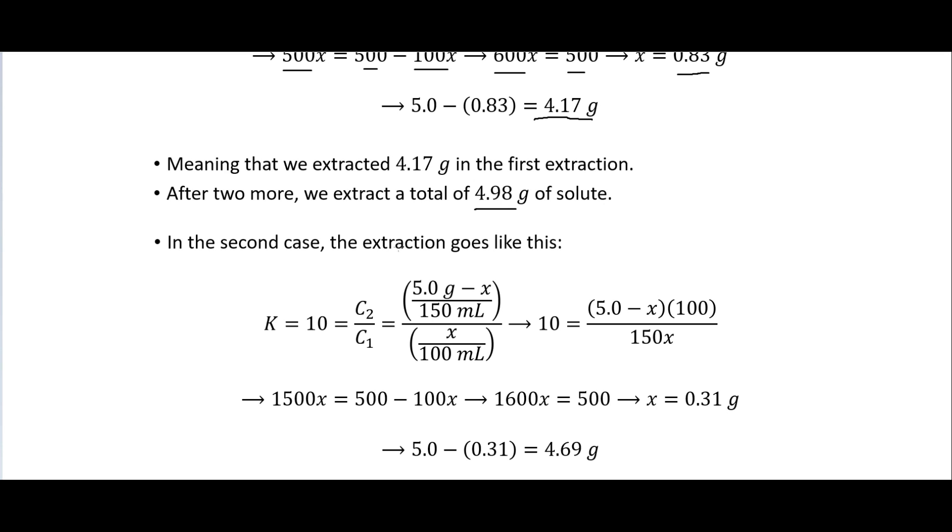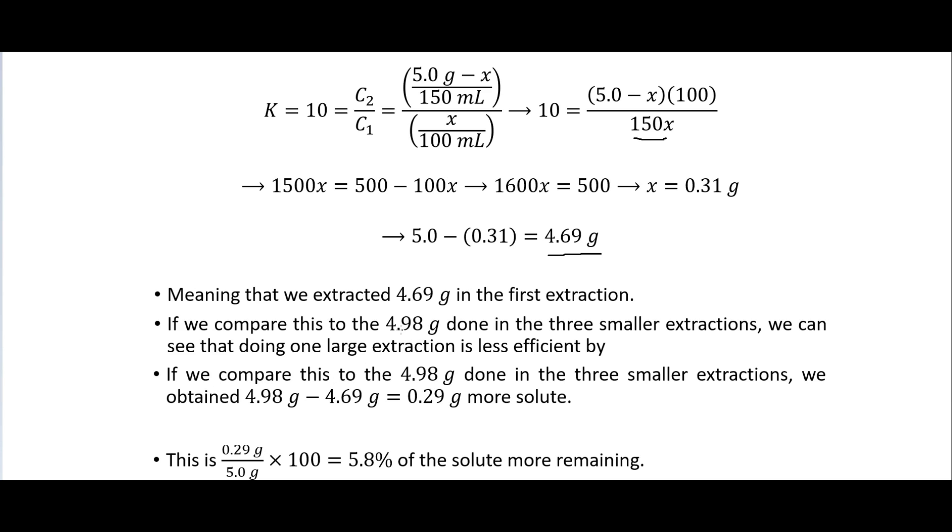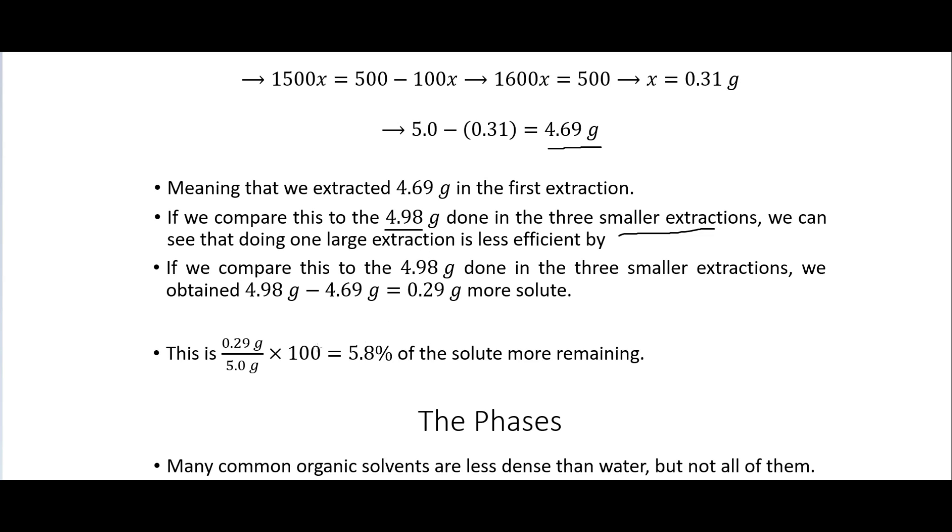In the second case if we do the extraction just once but with 150 milliliters rather than the 50 what we see is we end up getting just 4.69 grams of our solute extracted. And so that means we compare this to the 4.98 grams done in the three smaller extractions. We can see that doing one large extraction is less efficient. And it's less efficient by this amount. So we are losing this much by doing just the one large extraction rather than three smaller ones, which is about 5.8 percent of our solute that will be remaining in the water solvent. So we're trying to extract it from the water and we'll end up with some left over. And if we do three smaller extractions we will get more of it out than if we do one large extraction.